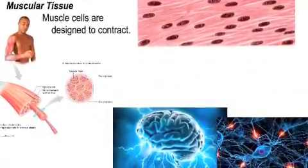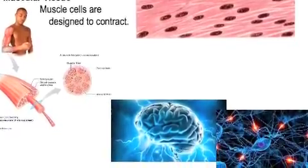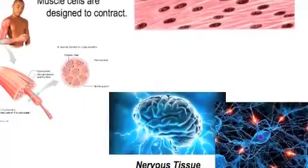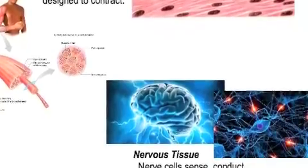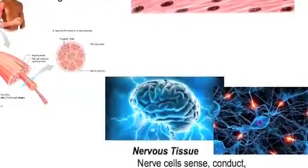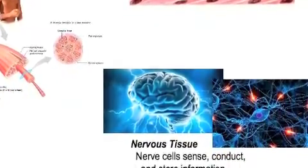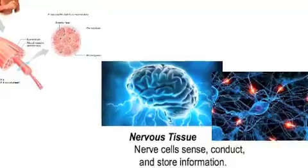In muscular tissue, muscle cells are designed to contract. Nervous tissue is made up of nerve cells that sense, conduct, and store information.